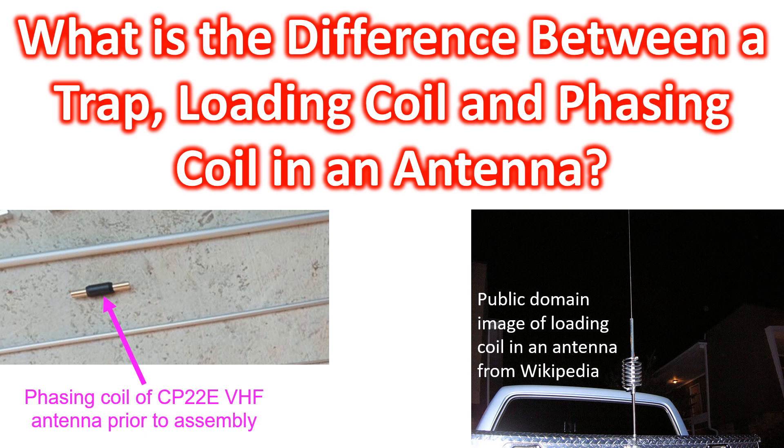My single band VHF only CP22E antenna has a phasing coil between the upper and lower elements. CP22E is a two element 5 by 8 lambda stacked ground plane antenna with three radials. Upper and lower sections are assembled with the phasing coil in between.